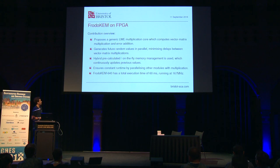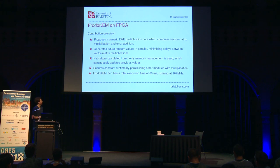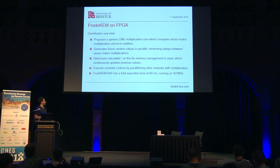For the FPGA design, we propose a generic LWE multiplication core which computes vector-matrix multiplication and error addition — instead of matrix-matrix, we do vector-matrix and repeat on the vectors of the left-hand side matrix. We generate future randomness in parallel, which minimizes delays between multiplications. This makes the bottleneck of the schemes in hardware the multiplication itself. We have on-the-fly memory management, meaning the next values are ready to use, so we don't need as much memory. This design also runs in constant time, achieved by making multiplication the bottleneck so that randomness generation is done in parallel.